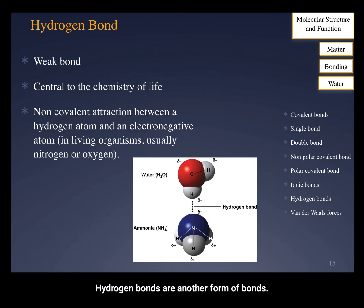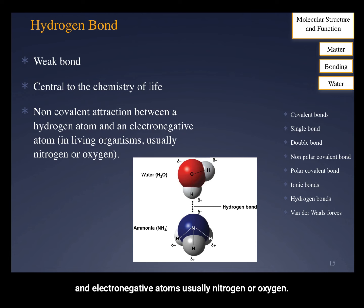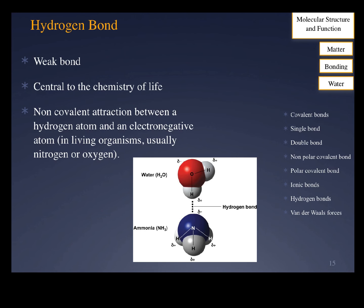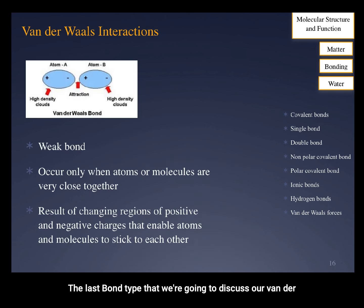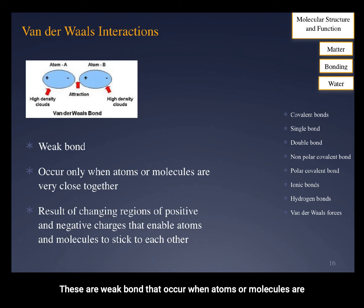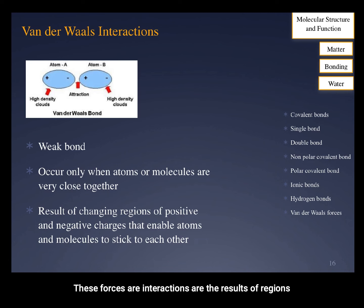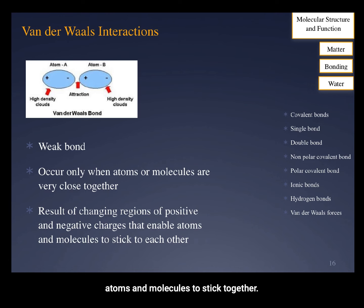Hydrogen bonds are another form of bonds. These are weak, noncovalent attractions between hydrogen and electronegative atoms, usually nitrogen or oxygen. These bonds will be of importance to us as we study biology when we look at DNA structure. The last bond type we're going to discuss are van der Waals forces — weak bonds that occur when atoms or molecules are in very close proximity. These interactions are the result of regions of positive and negative charges that change to enable other atoms and molecules to stick together.